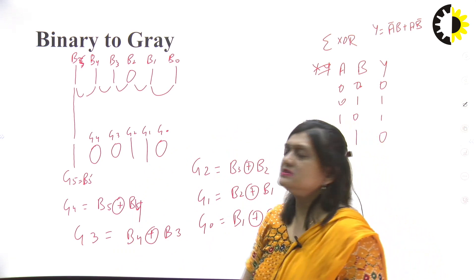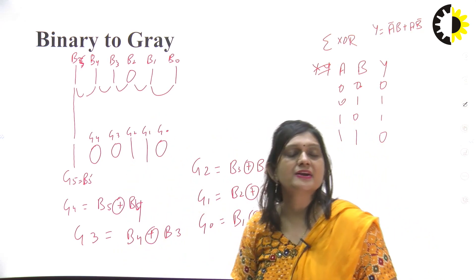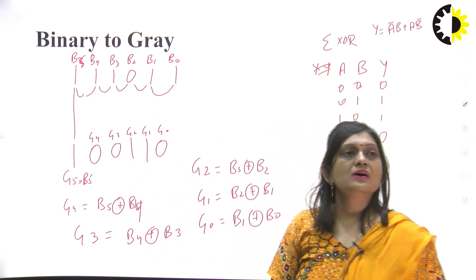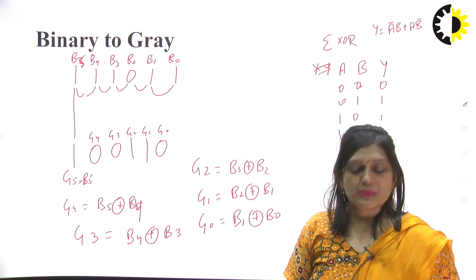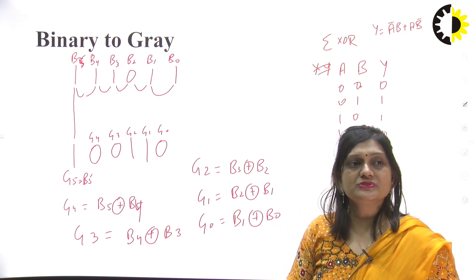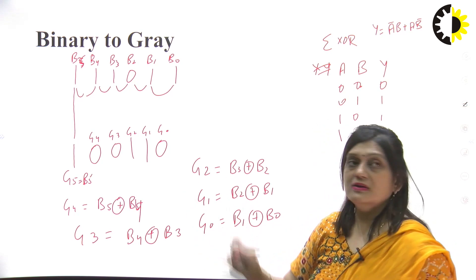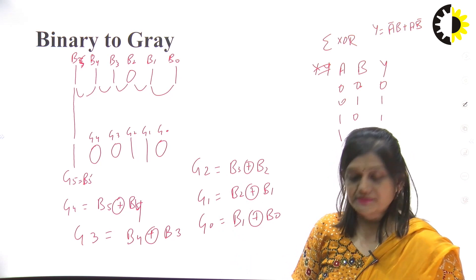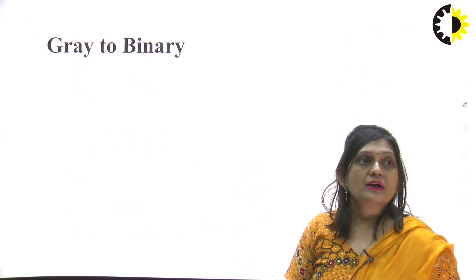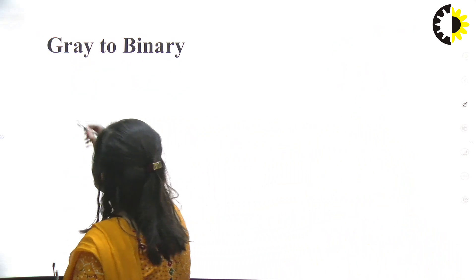This is how we can convert a binary number into a gray code number using the XOR formulas. After that, we have to convert gray code back to binary.